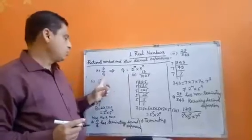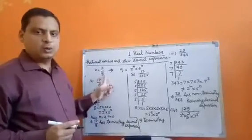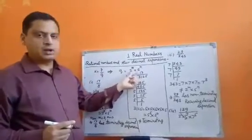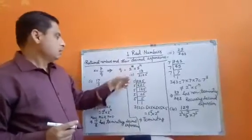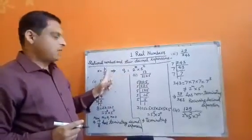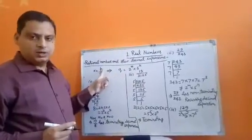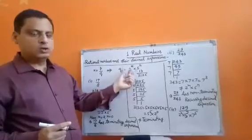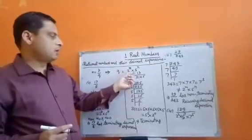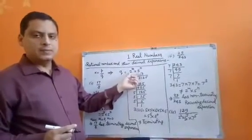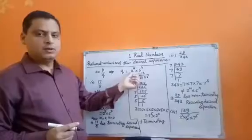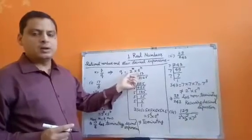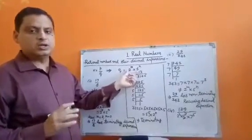If the prime factorization of q is of the form 2 power m into 5 power n, then the number will have a terminating decimal expansion. And if the prime factorization of q is not of the form 2 power m into 5 power n, then the number will have a non-terminating repeating decimal expansion.